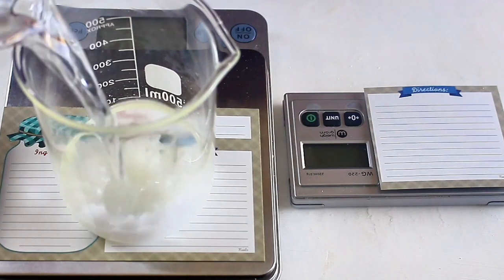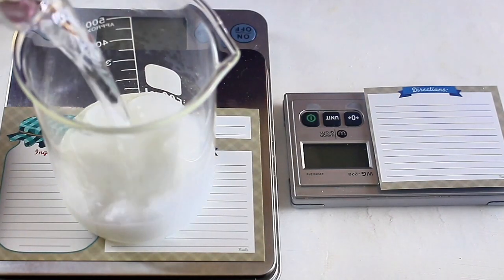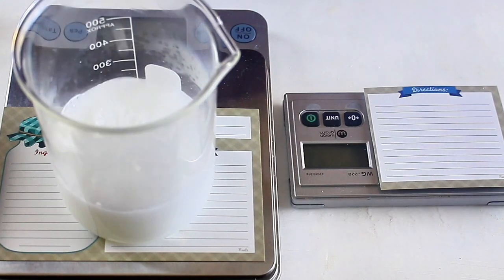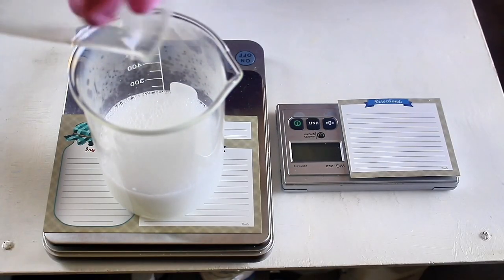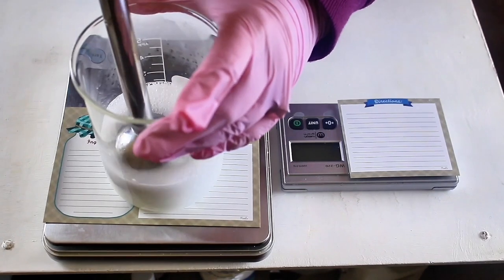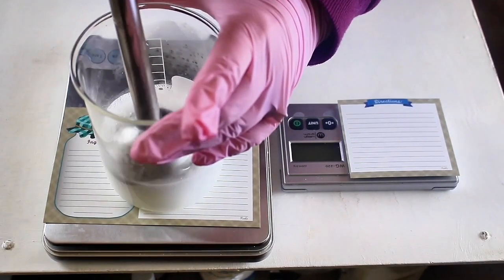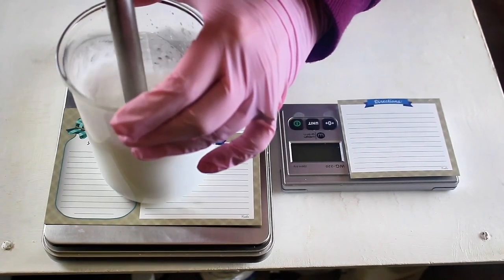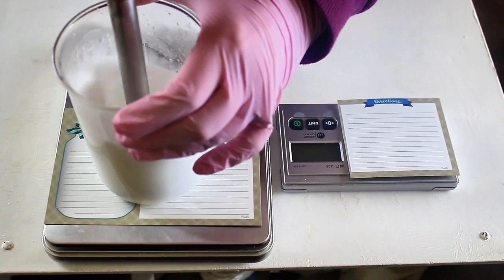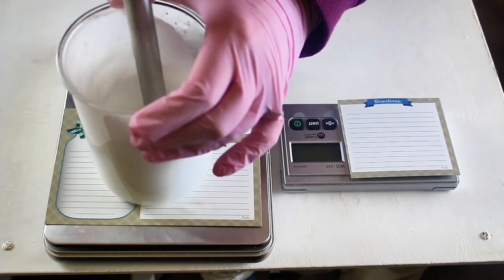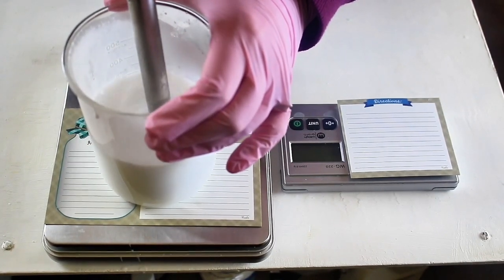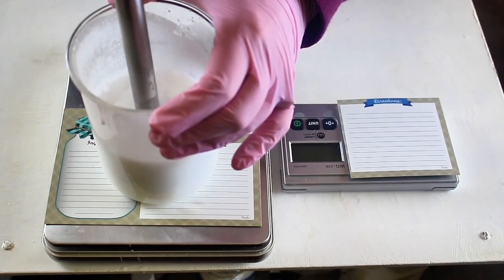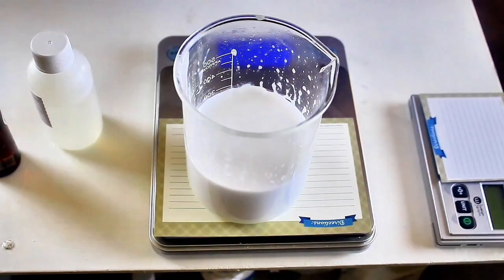Next up, we'll pour the water phase into the oil phase. Then we'll start the mixing process with an immersion blender, and I mix this for about 5 minutes. I let it cool down to below 113 degrees, and then I start adding in the cool-down ingredients.